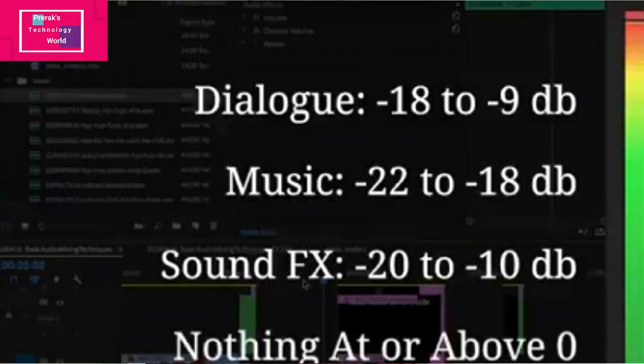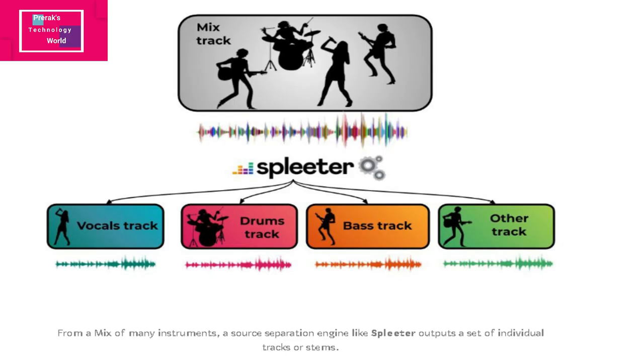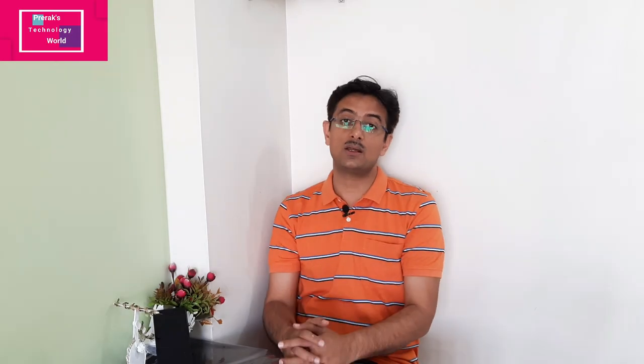If you have different music tracks — like a piano track, a tabla track, and a harmonium track — and you have a mixed music file, you can also segregate the individual music instrument tracks using these machine learning models.